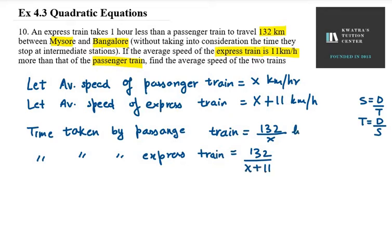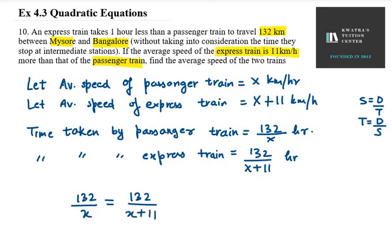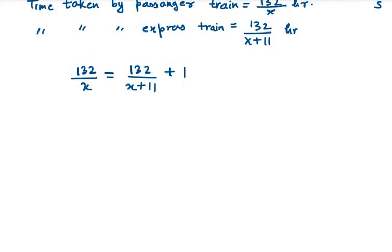So these are the two time expressions. The passenger train's time is 132 over x, and the express train's time is 132 over x plus 11. Since the express train takes one hour less, we write: 132/x minus 132/(x+11) equals 1.